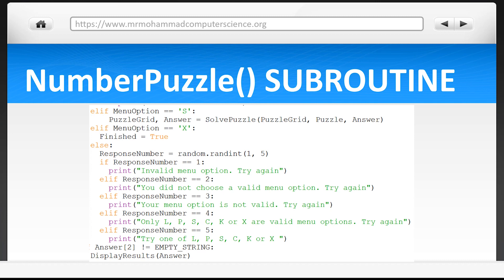At the end of the program, if the third item in answer is not empty, the results are displayed to the user using the DisplayResult subroutine. Let's take a look at this now.